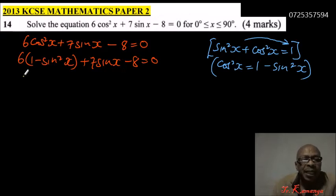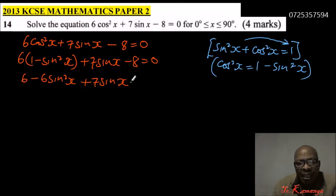We open the bracket. We have 6 times 1 minus 6 sin²x + 7 sin x - 8 = 0.